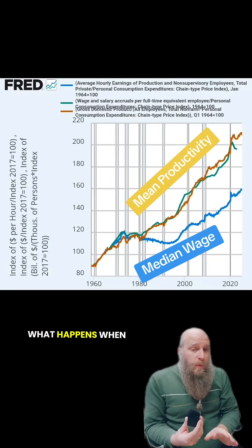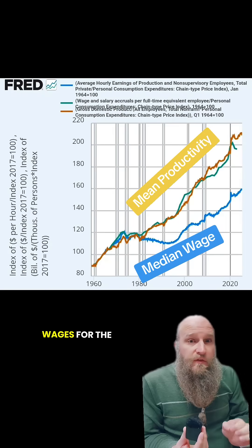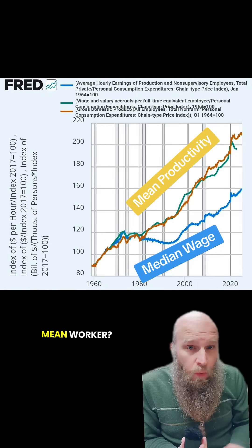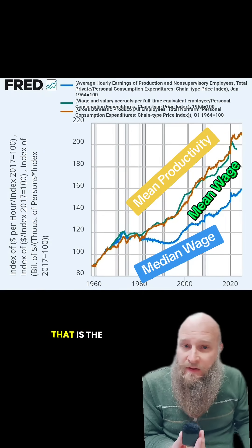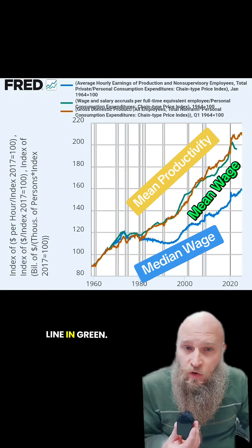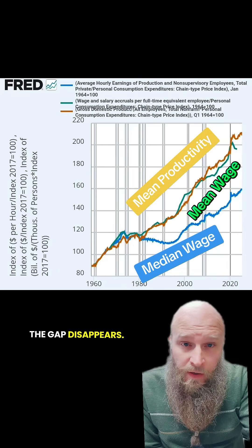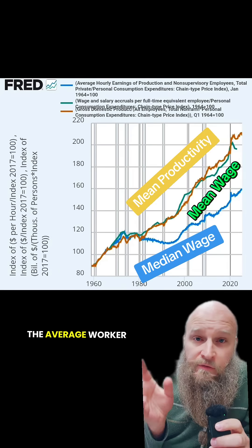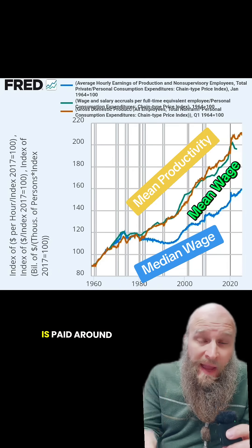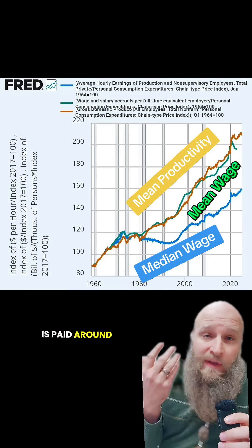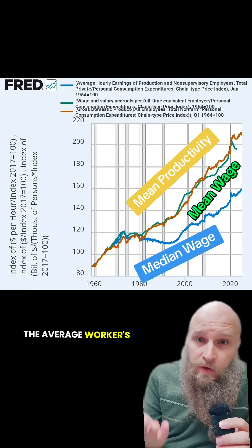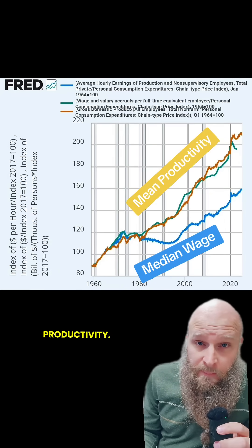So let's try to do apples to apples. What happens when you look at wages for the mean worker? That is the line in green. The gap disappears. The average worker is paid around the average worker's productivity.